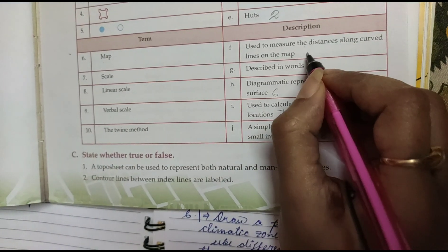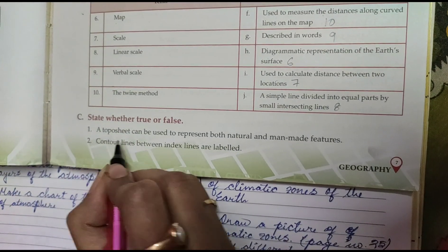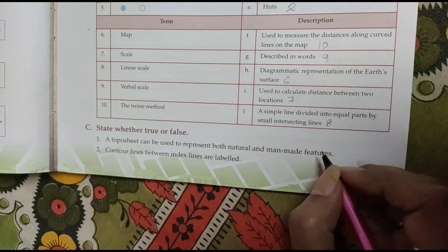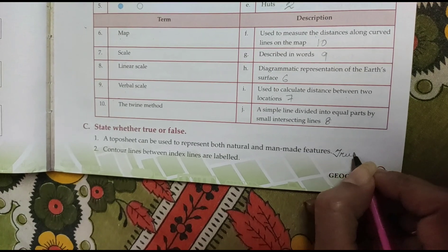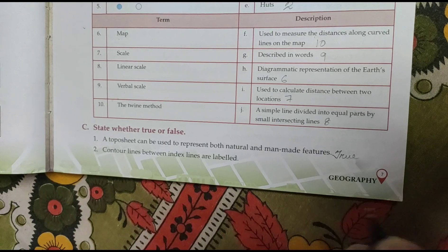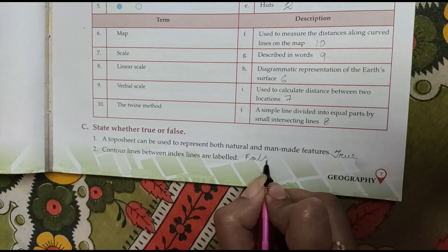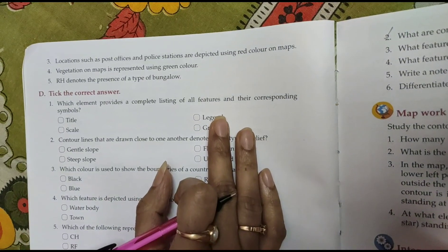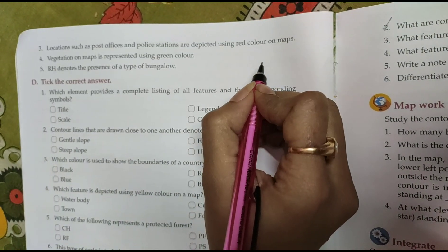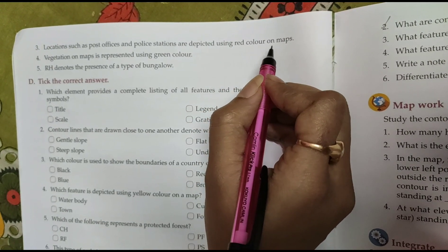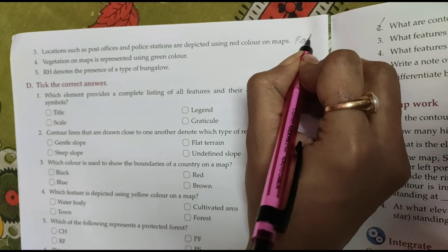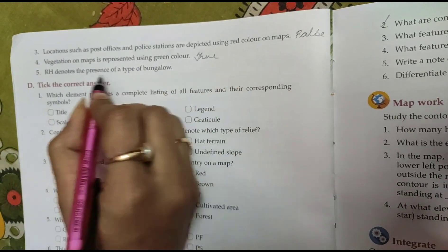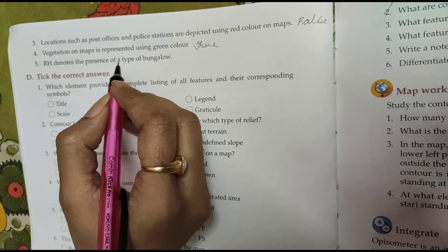True or false. First one, a toposheet can be used to represent both natural and man-made features, that is true. Contour lines between index lines are labeled, that is false. Location such as post offices and police stations are depicted using red colors on map, that is false. Vegetation on map is represented using green color, that is true. Hut is denoted as a type of bungalow, yes true.